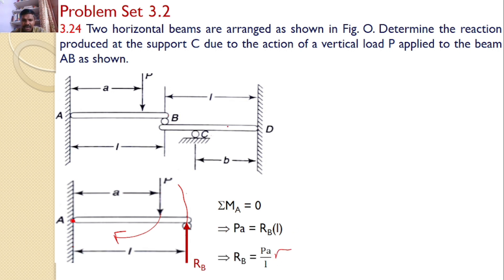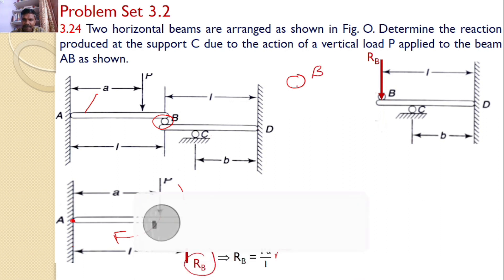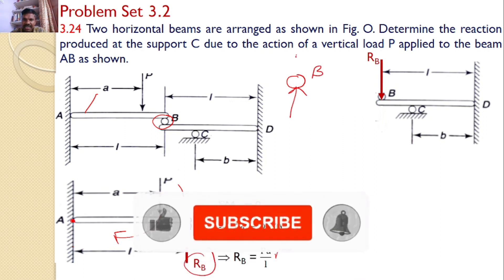Let us draw the free body diagram of beam BD. Now the same roller support B is also on beam BD. On beam AB the reaction is upwards. Hence on beam BD the reaction must be downwards to maintain equilibrium. So if you draw the free body diagram for roller B, the two forces must be like this.